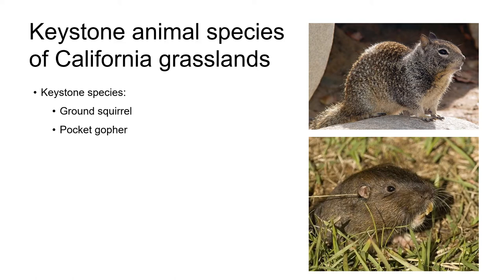The abundant and diverse flora and the open, low-growing architecture of grassland plant communities supports a wide range of animals. Two of the most important animals in grasslands are ground squirrels and pocket gophers. From a horticultural point of view we don't usually welcome these two creatures, but ecologically they're both considered keystone species of grasslands. Keystone species are ones which are crucial to the functioning of an ecosystem, and without them the ecosystem will eventually collapse.